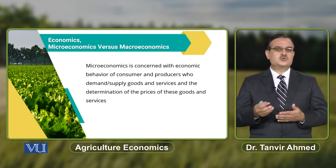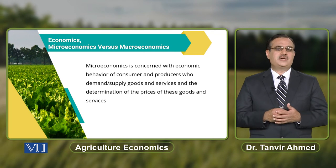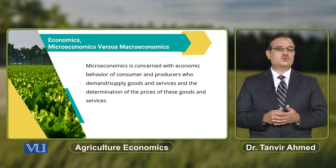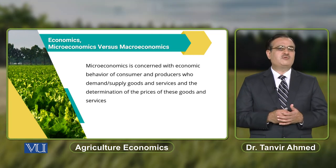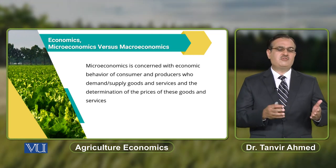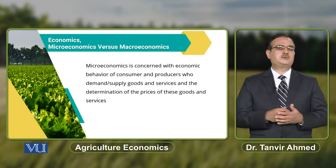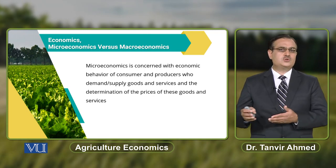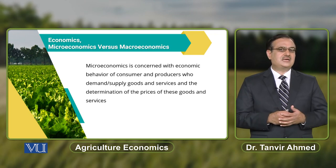When we talk about the consumer's choice, the objective of the consumer is to maximize his satisfaction by using his limited resources. When we move to the producer side, the objective of the producer is to make an efficient production, and the objective of the producer is also to maximize his profit.